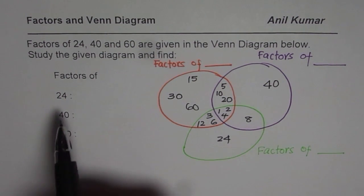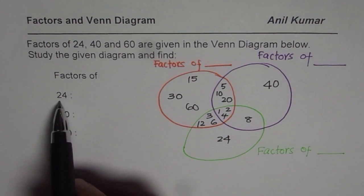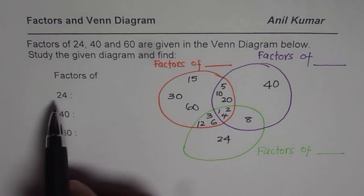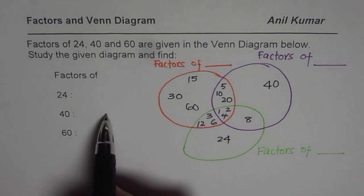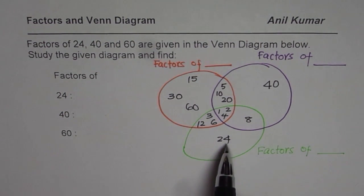Once you do that, then you write all the factors for these numbers on the sides. Write 24 factors are, write down all the factors for 24, 40 and 60 from the given Venn diagram.